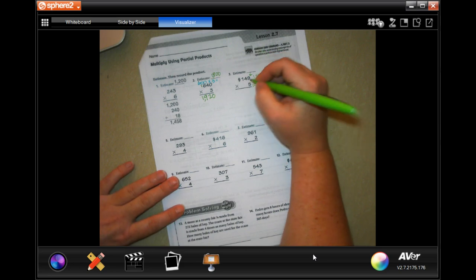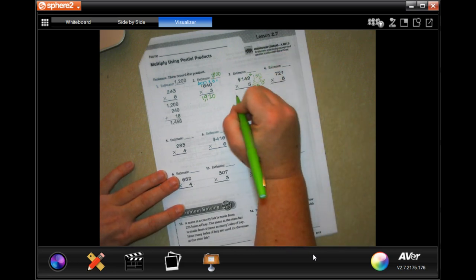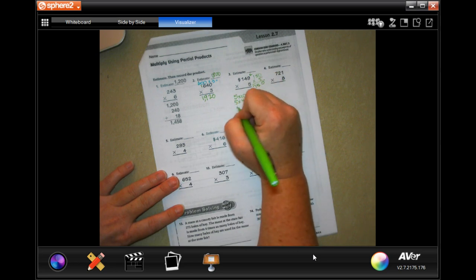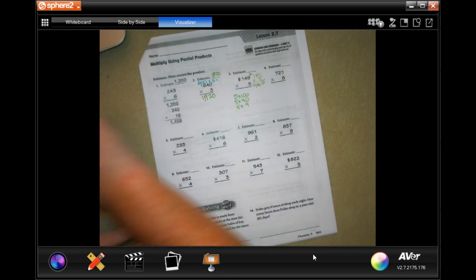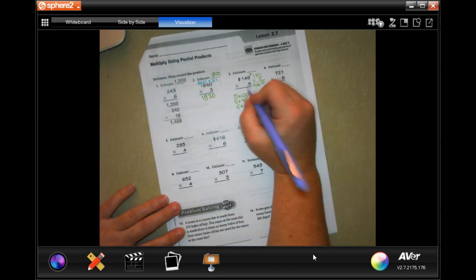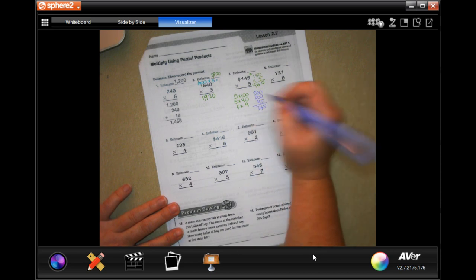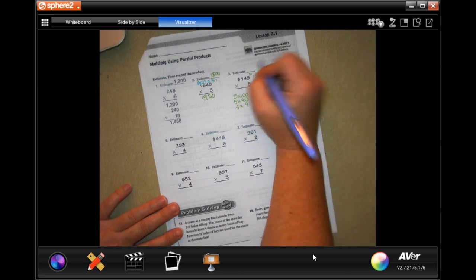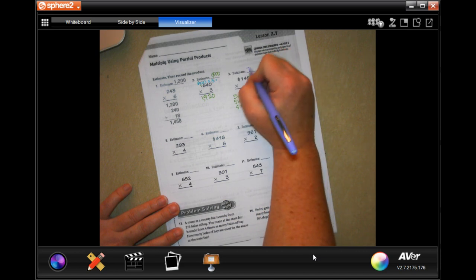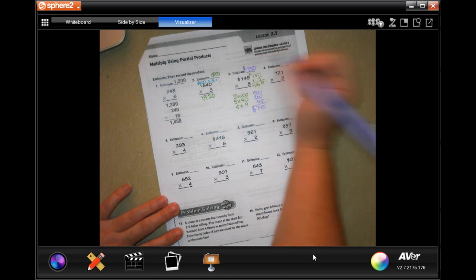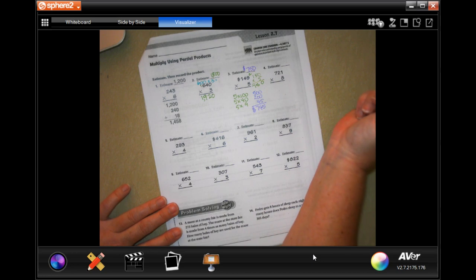So now doing this, we could have 5 times 100, 5 times 40, and 5 times 9. So we have 500, 200, 45. So 5, 4, 7, 745. And don't forget to put your dollar sign in. That's your label.